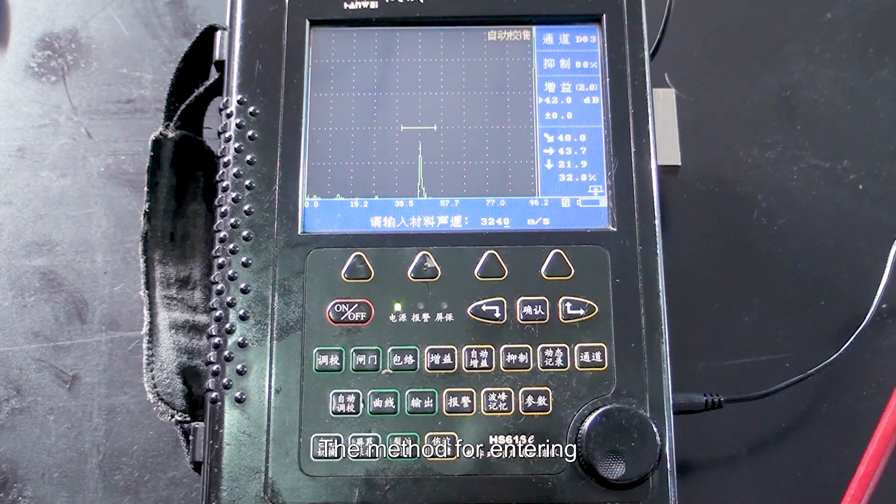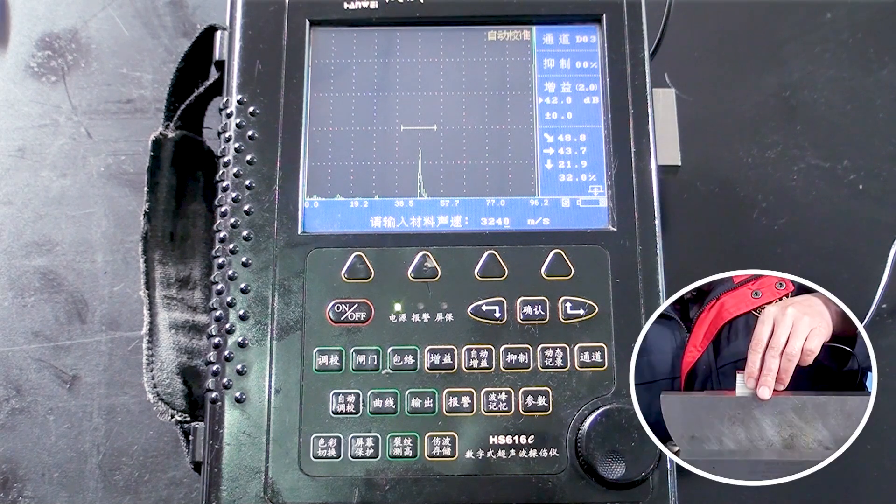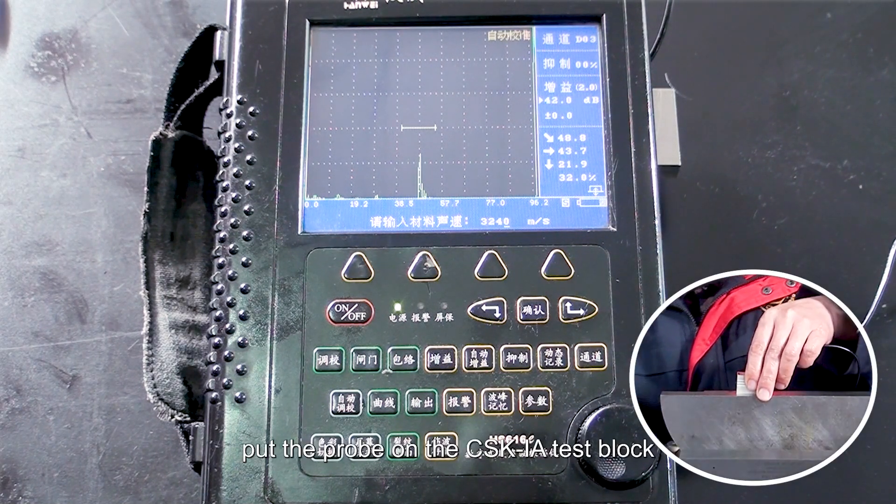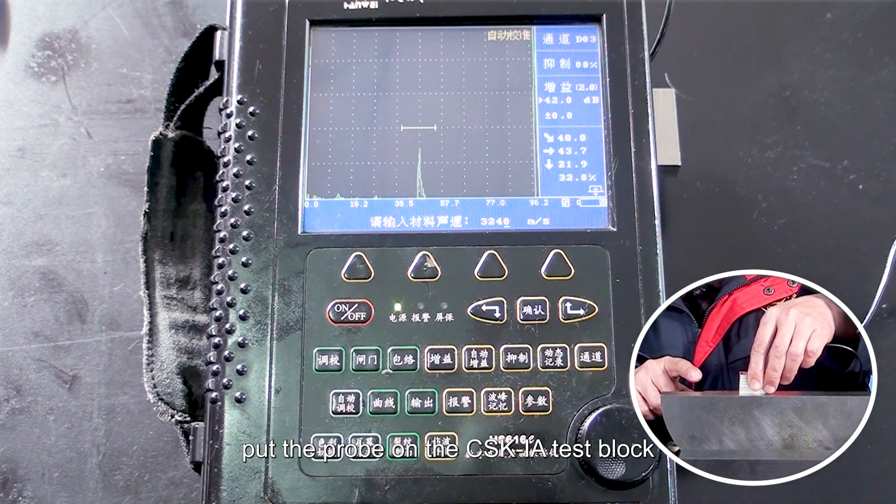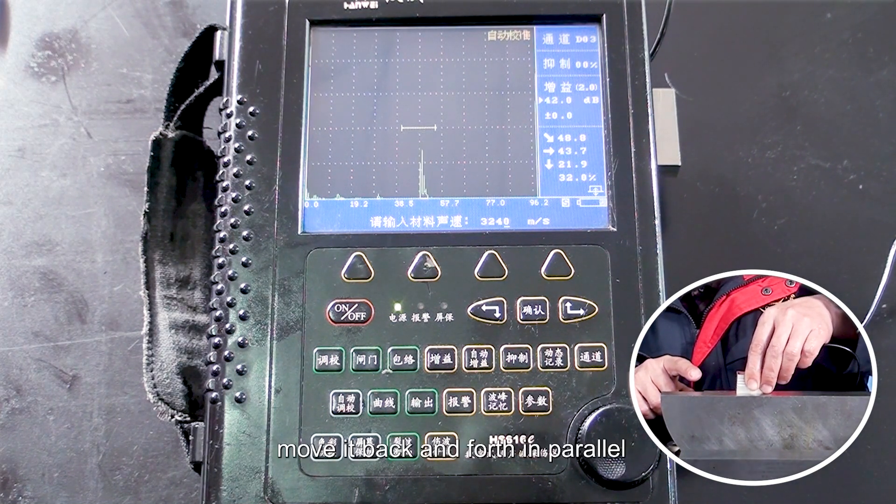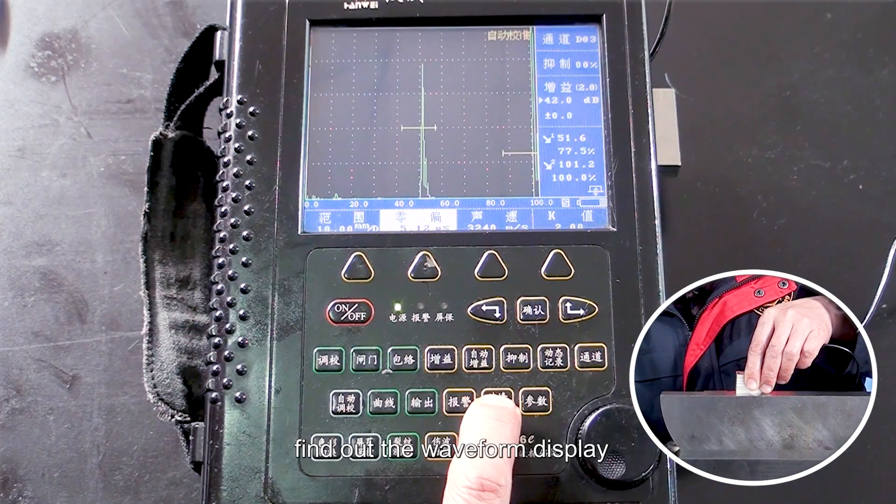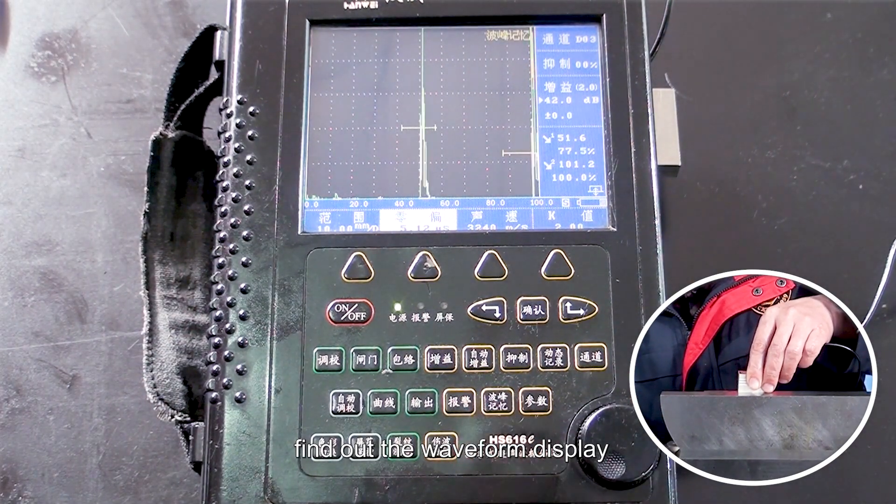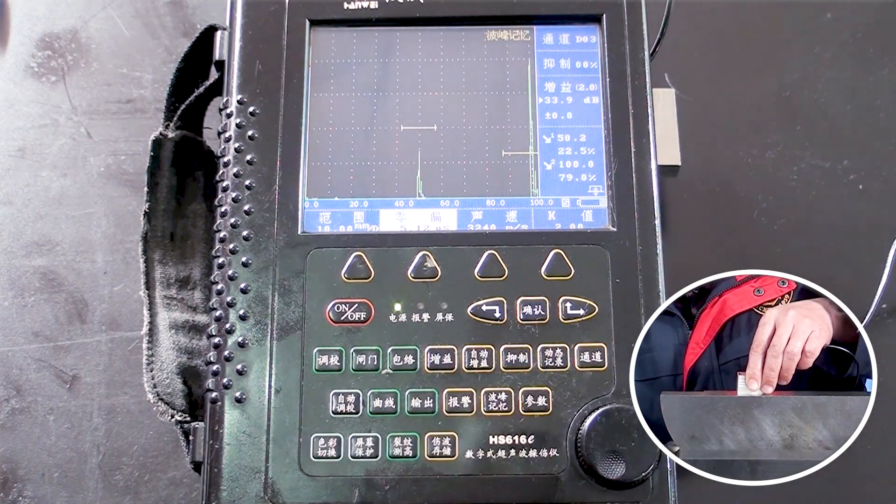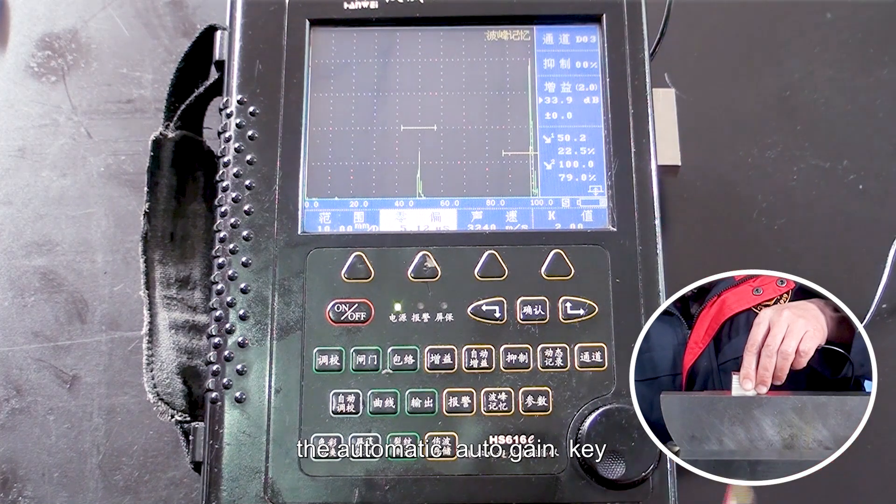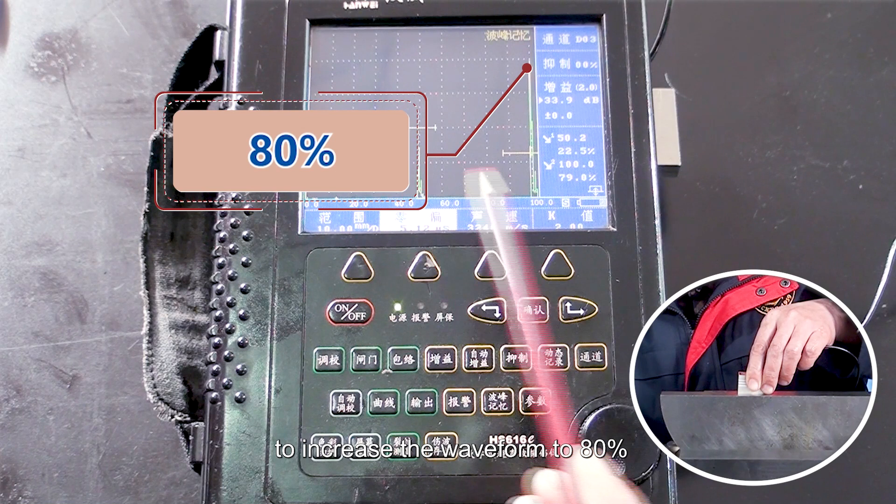The method for entering the incident point test is as follows. Put the probe on the CSK-IA test block, move it back and forth in parallel, find out the waveform display, press the peak memory key, and then press the automatic auto-grain key to increase the waveform to 80 percent.